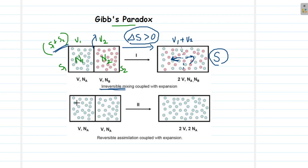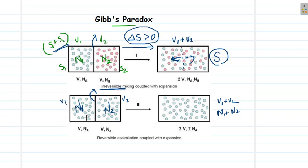Now let us consider another case. We have the same boxes: compartment 1 with volume V1 and compartment 2 with volume V2. The only difference is that we have the same kind of molecules in both compartments — N1 molecules in one and N2 molecules in the other. Again we remove the partition and allow the gases to mix, giving total volume V1 plus V2 and total number of particles N1 plus N2. S1 is the entropy of compartment 1, S2 is the entropy of compartment 2, so the initial total entropy is S1 plus S2.